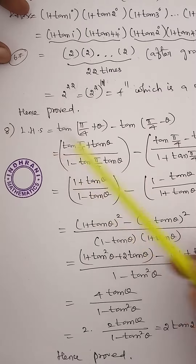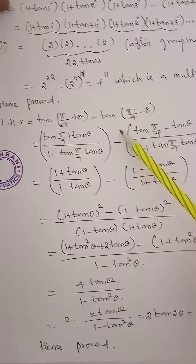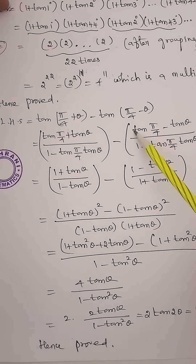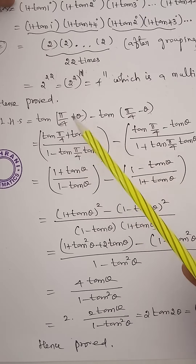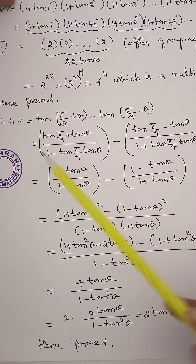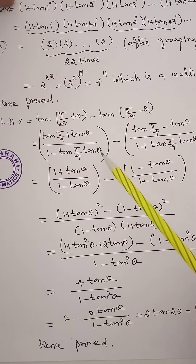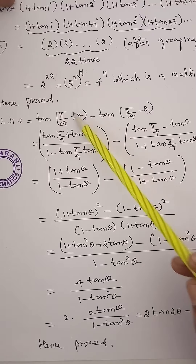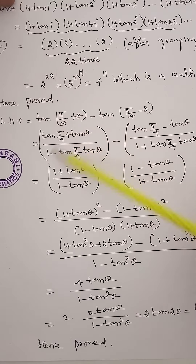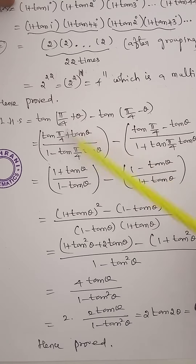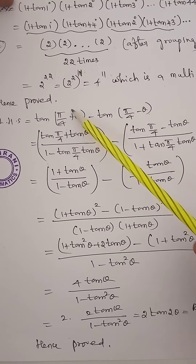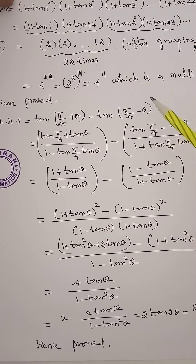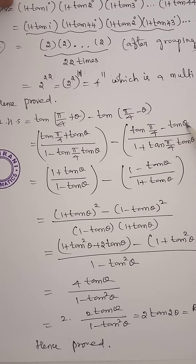We have to write tan(π/4 + θ) minus tan(π/4 − θ). The formula for tan(A + B) is (tan A + tan B) / (1 − tan A · tan B). If you have plus, the sign becomes minus. Here A = π/4 and B = θ.